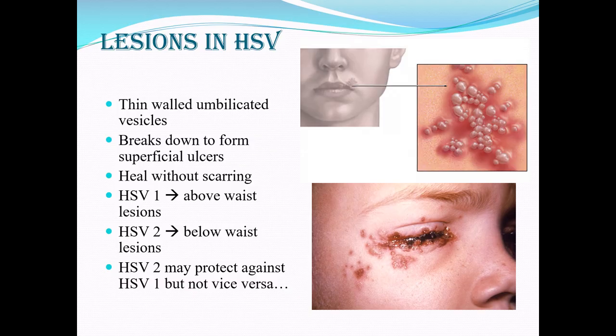The lesions are thin-walled with a small central depression, so they are called umbilicated vesicles. These slowly break down and the nearby ones join together to form superficial ulcers. These ulcers eventually heal without much scarring.